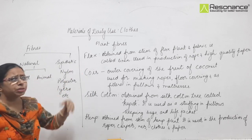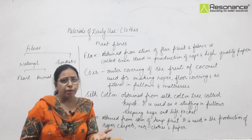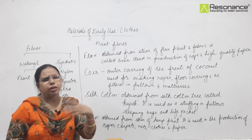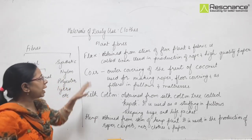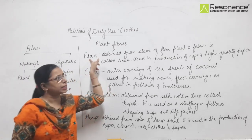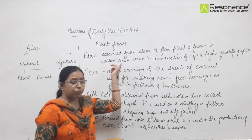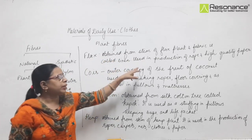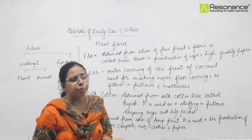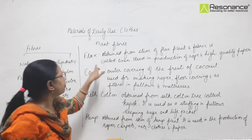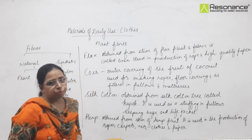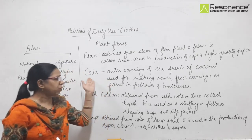Today we will discuss other plant fibers briefly. Like flax - you must have heard about linen fabric, linen scarves and so on. Linen is obtained from the stem of the flax plant. So this is also a bast fiber and this fabric is known as linen. It is used in the production of rope and high quality paper.